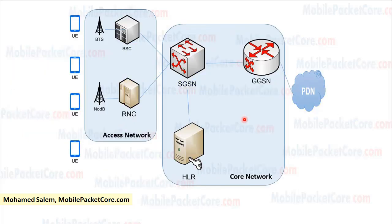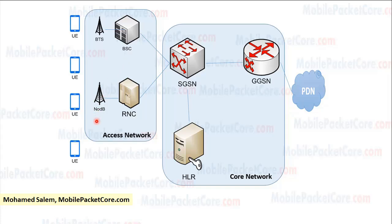In summary, the core network in 2G and 3G is the same. It contains the SGSN, which authenticates the UE and tracks its location; the HLR, that stores subscription data for users; and the GGSN, that connects the core network to the PDN. The access network in 2G contains the BTS and the BSC, while the access network in 3G contains the Node B and the RNC.